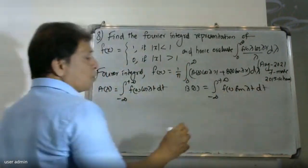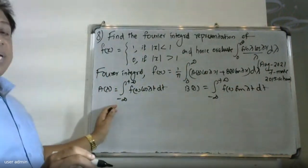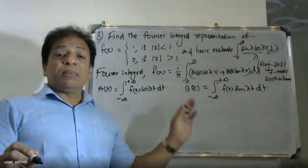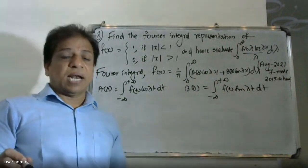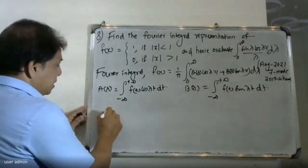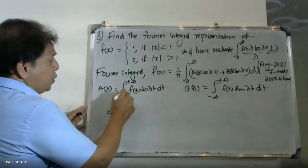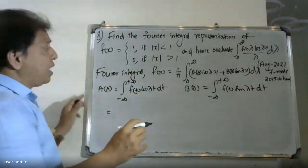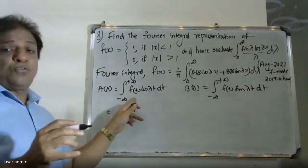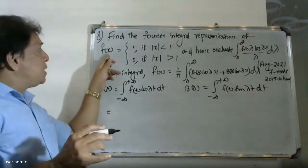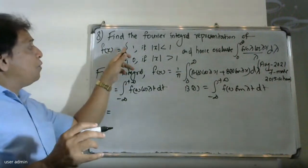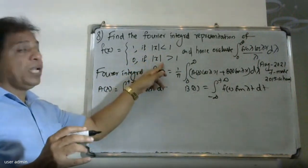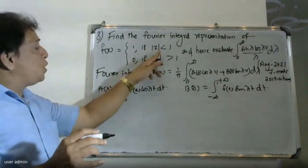We check A(lambda) and B(lambda) using the given function. We substitute the function f(t), where f(t) is equal to 1 if |t| is less than 1, and zero if |t| is greater than 1.